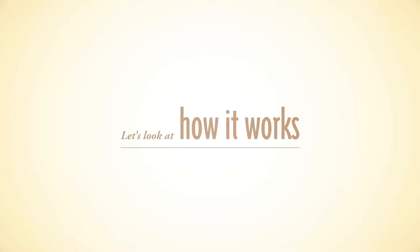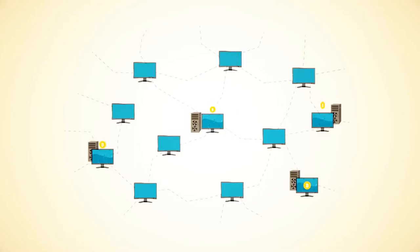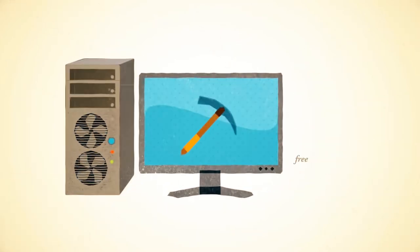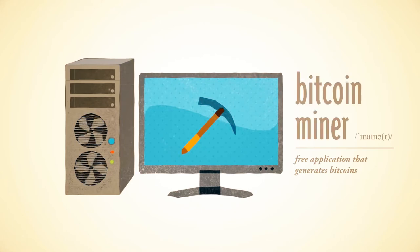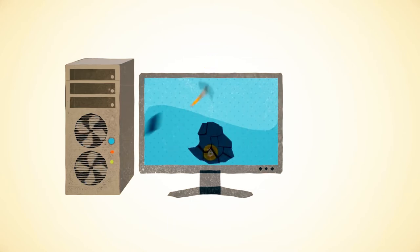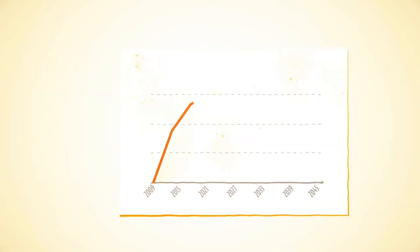Let's look at how it works. Bitcoins are generated all over the Internet by anybody running a free application called a Bitcoin miner. Mining requires a certain amount of work for each block of coins. This amount is automatically adjusted by the network such that Bitcoins are always created at a predictable and limited rate.